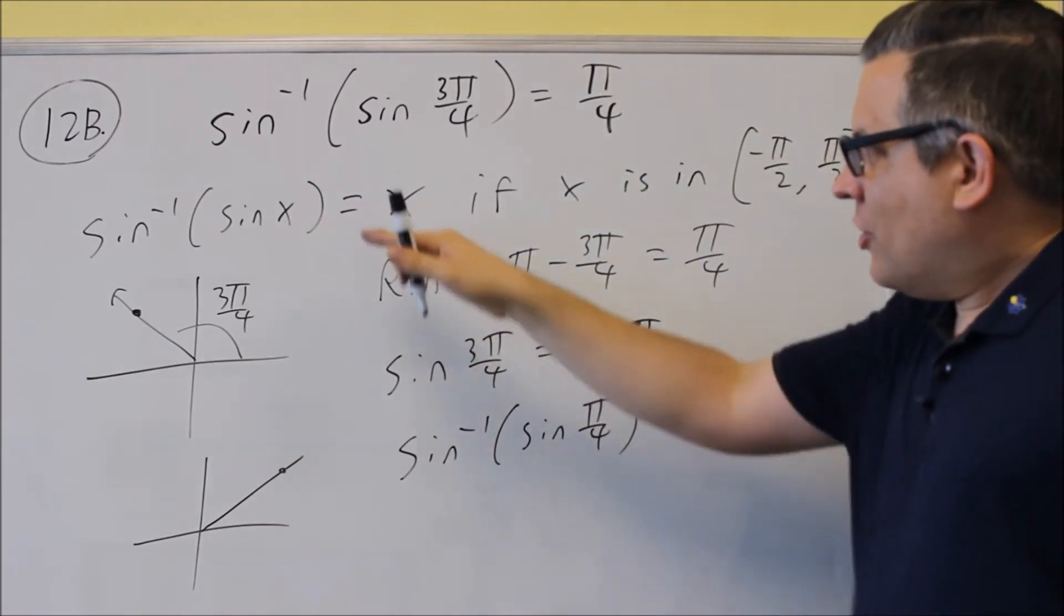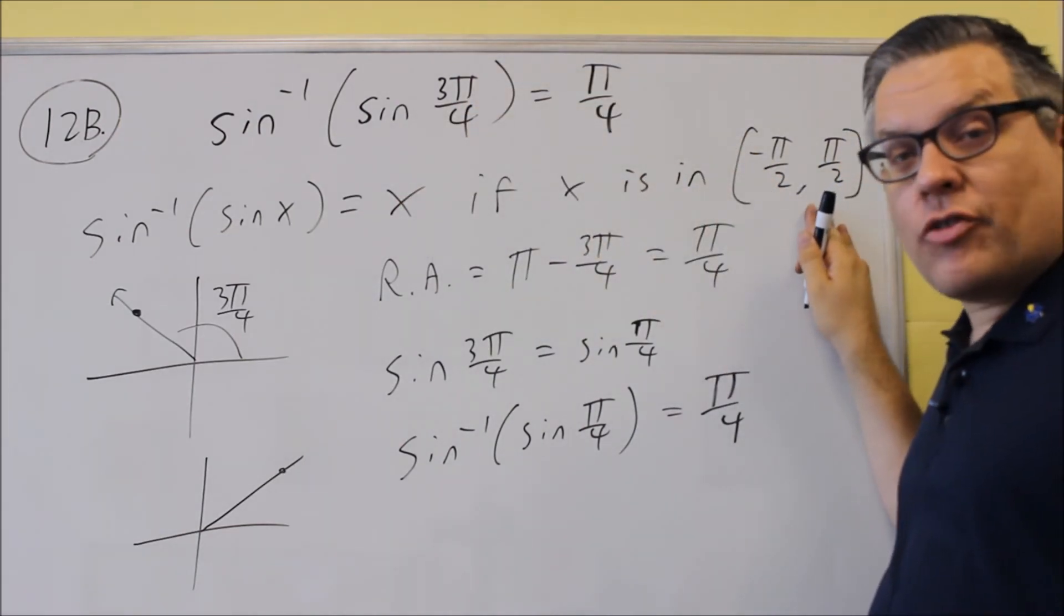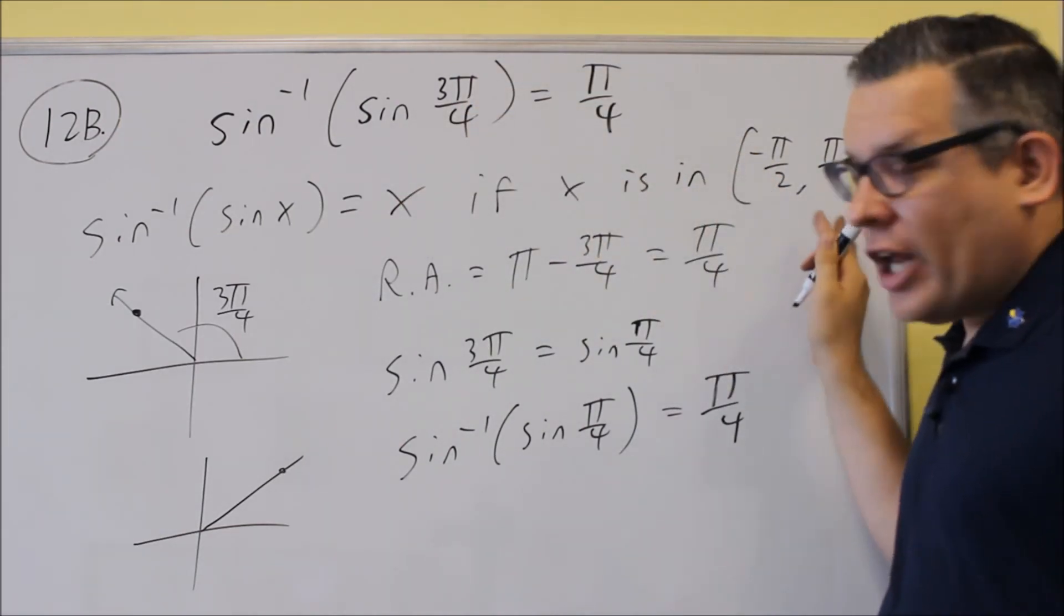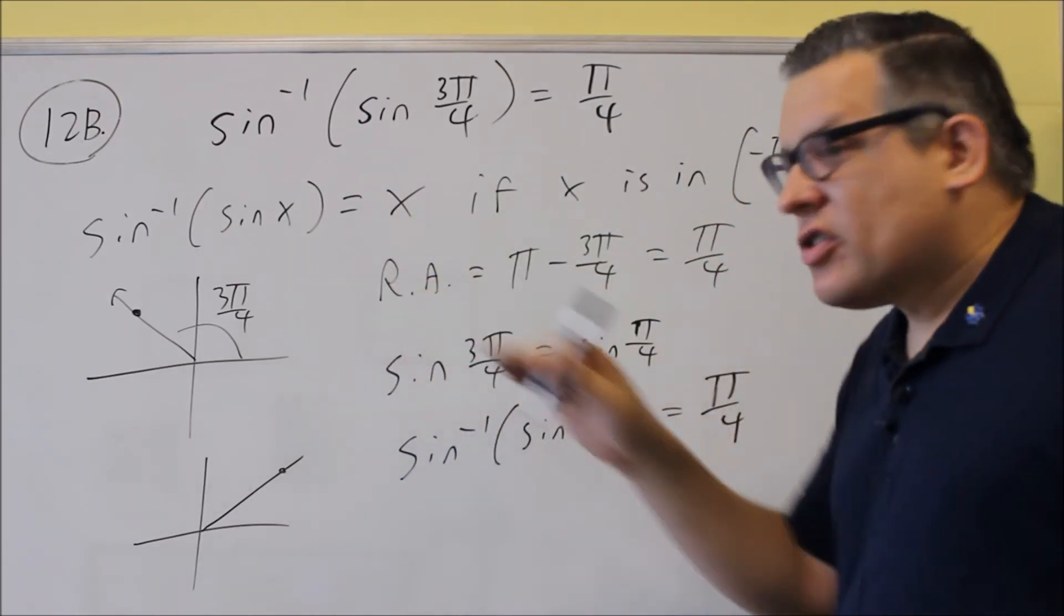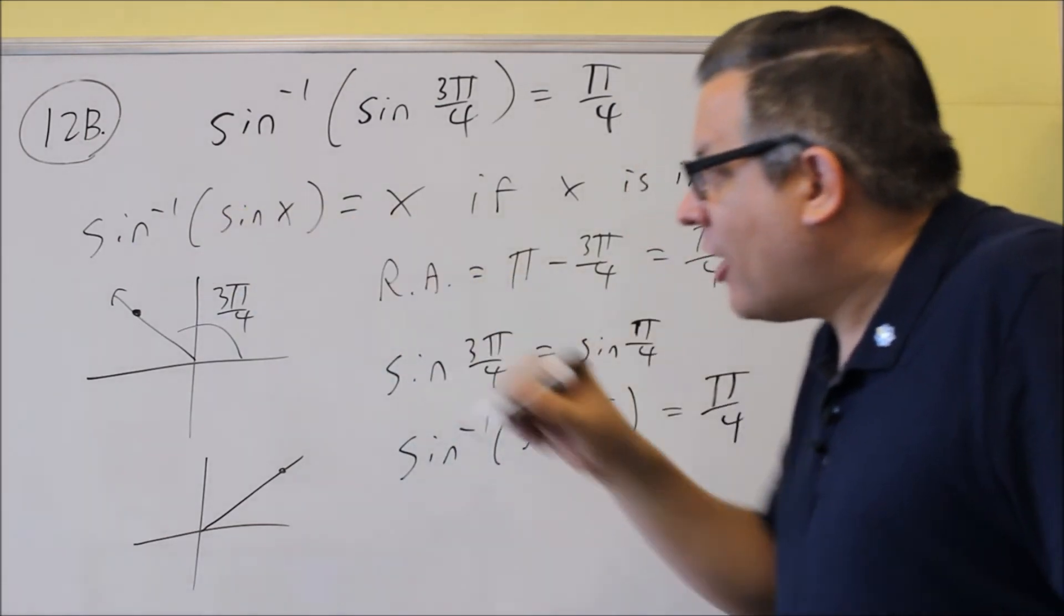So again, just to kind of review all that: 3π over 4, we know it's not equal to because 3π over 4 is not in this interval. When that occurs, you do the reference angle and try to find an equivalent trig function to have the same value as that.